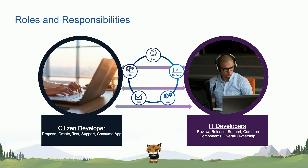Let's talk about what citizen developers are actually supposed to be doing. In terms of roles and responsibilities, citizen developers are the ones who propose the actual application. Then, based on triage by the IT department, they will be the ones who create the application — proposing, creating, testing, supporting, and also consuming what they've actually built. On the other side are the IT developers. The IT developers are the ones who sit in the IT department, review what's happening, have overall ownership of the whole citizen developer program, and provide support and build common business components.